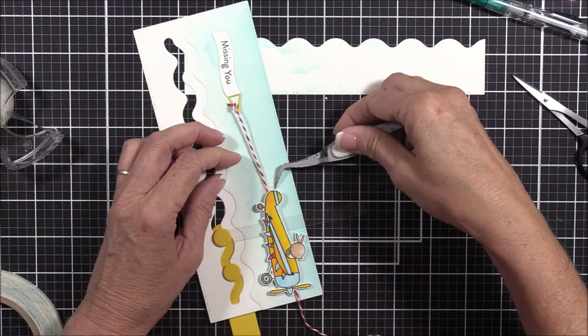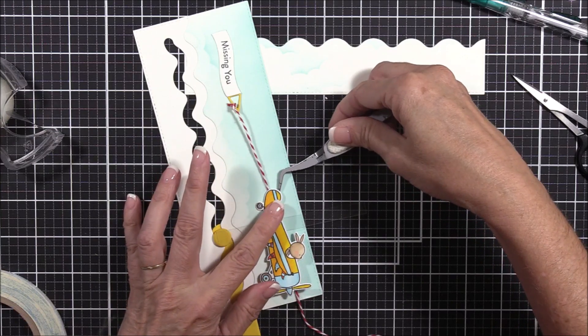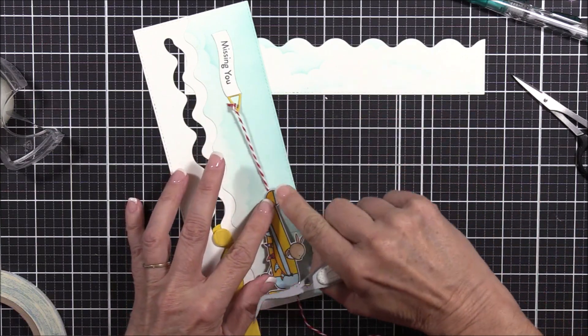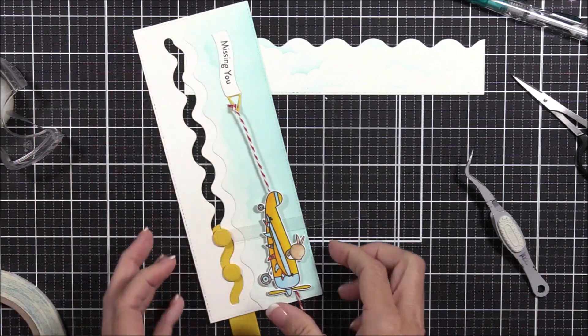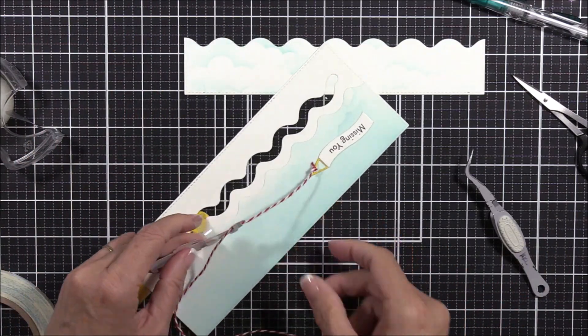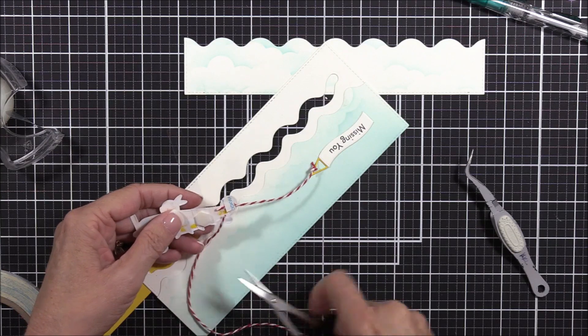And you'll notice that I pulled the airplane all the way to the right to figure out how long the Baker's twine needed to be before I secured the end to the tail of the airplane. And then I'll trim the excess Baker's twine with my scissors.